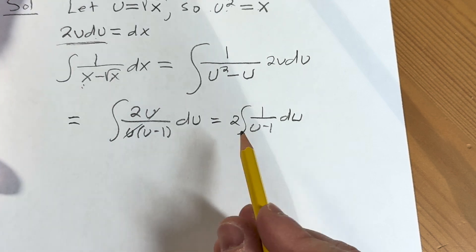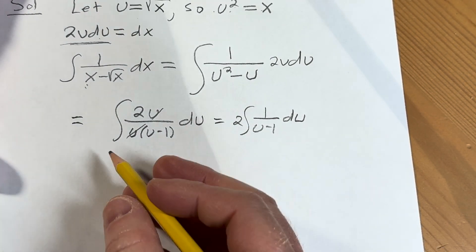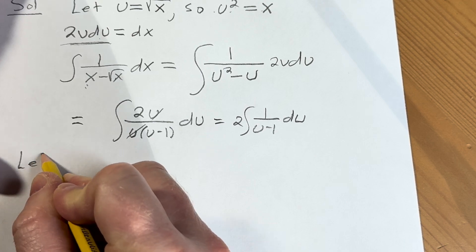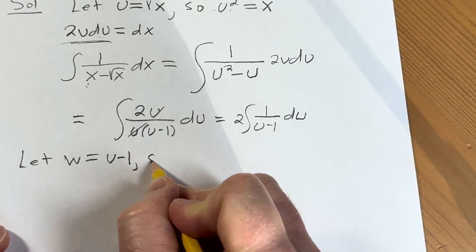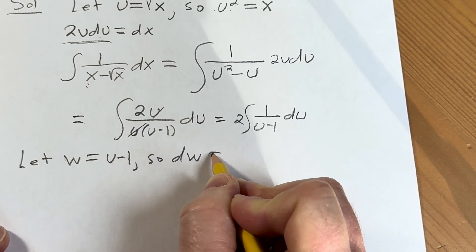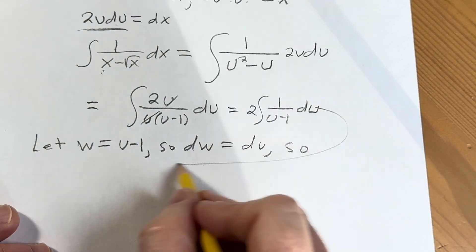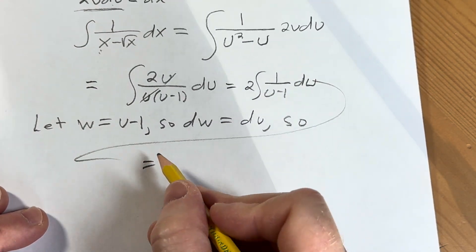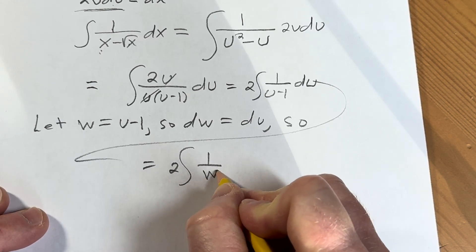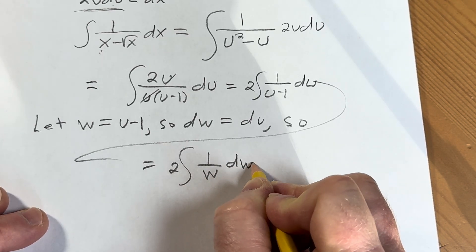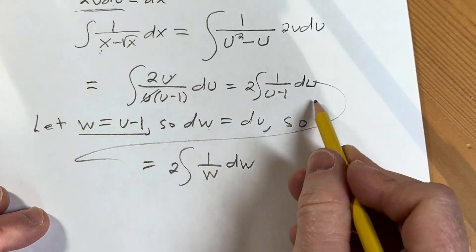We can make another substitution here, or we can just do it in our heads — it's up to you. I'm going to make another one, so we're going to let w equal u minus 1. Normally I wouldn't do this, but it's a video, so let's do it. So dw is equal to du. So u minus 1 is equal to w, and dw is equal to du.